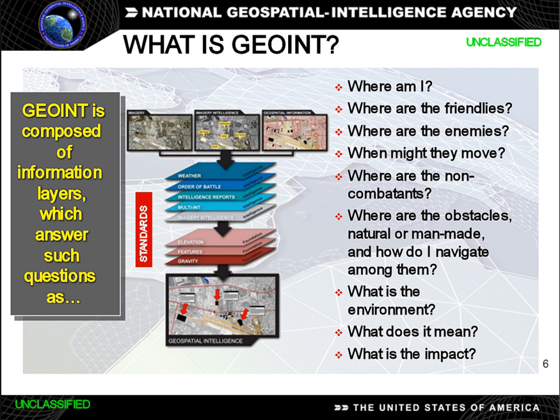Geospatial intelligence, or the frequently used term GEOINT, is an intelligence discipline comprising the exploitation and analysis of geospatial data and information to describe, assess, and visually depict physical features both natural and constructed and geographically referenced activities on the Earth. Geospatial intelligence data sources include imagery and mapping data, whether collected by commercial satellite, government satellite, aircraft such as unmanned aerial vehicles (UAV) or reconnaissance aircraft, or by other means such as maps and commercial databases, census information, GPS waypoints, and utility schematics.